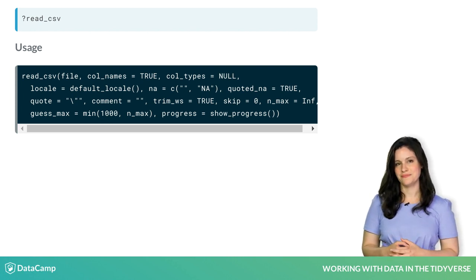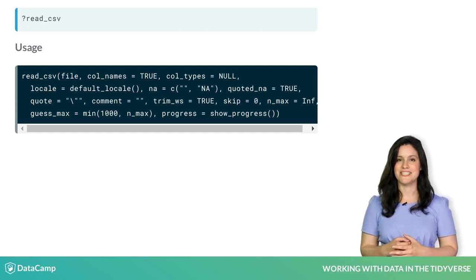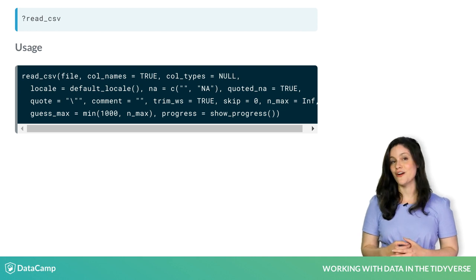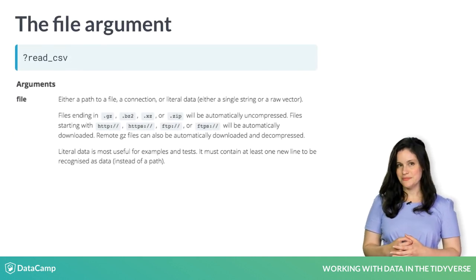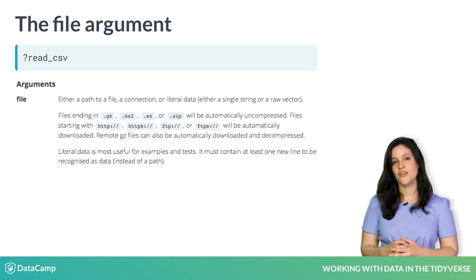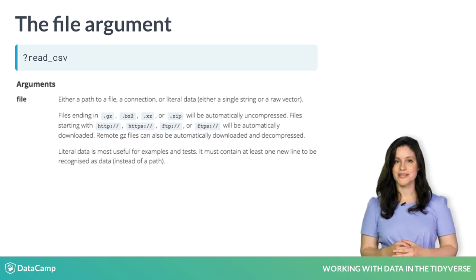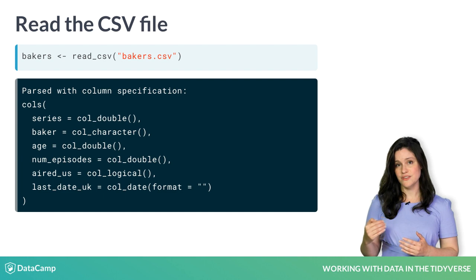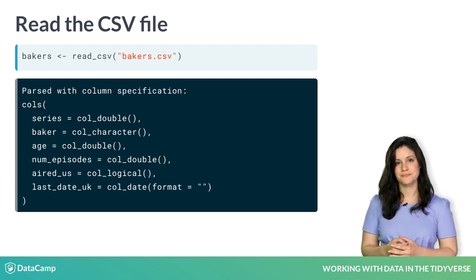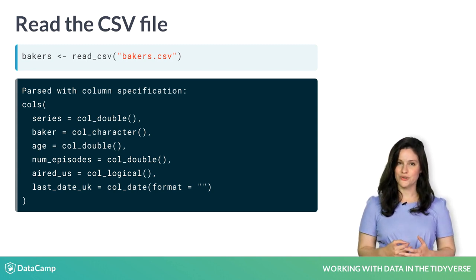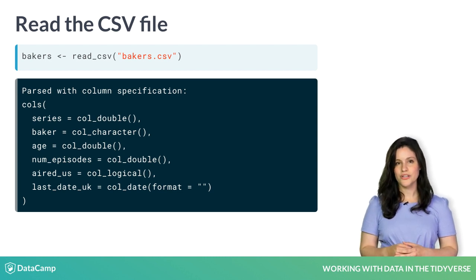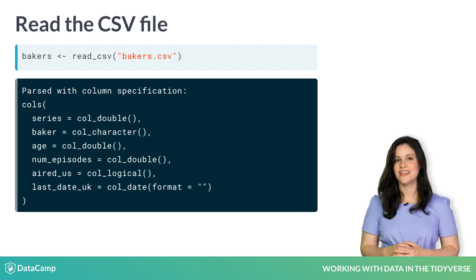We will start with the file argument, which has no default value and must be set. After usage are the arguments. The file argument is a path to a file. We will provide a single string, which means the path needs to be in quotes. We use the assignment operator to name this new object bakers. The read_csv function goes on the right. The only argument is the name of the file in quotes. If your data and script are in the same directory, R will look for the named data file in that directory. We will dig deeper into this output in chapter 2.